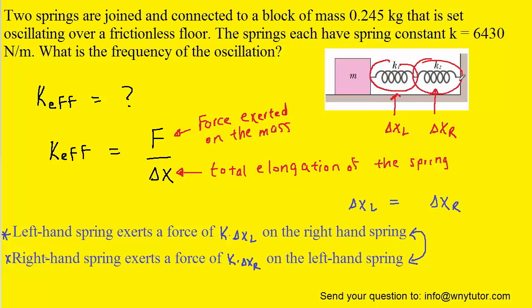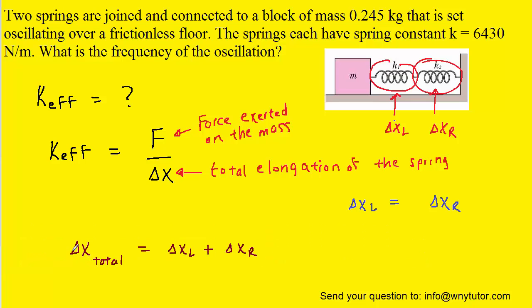If we go back to the picture, we can see that the grand total of elongation of the spring is the sum of these two elongations. The total elongation can be written as the sum of the individual elongations. We just concluded that delta x_L equals delta x_R, so we can replace delta x_R with delta x_L. Therefore, the total elongation of the spring could be written as 2 delta x_L.